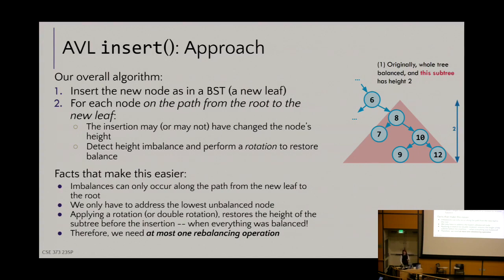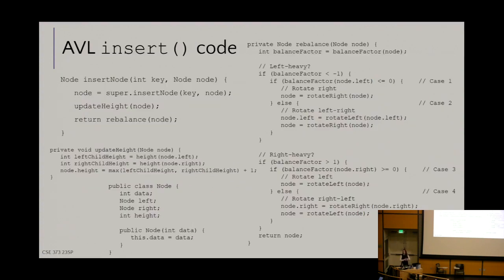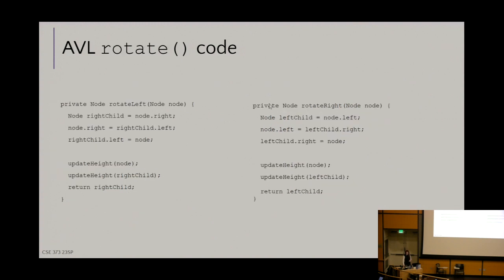The cons: AVL trees are notoriously a pain to implement. You've got two references at each level, a bunch of swapping. Here's some code I pulled — insert node updates the height and calls rebalance; the rebalance method checks each case with heavily nested ifs; the rotate-left and rotate-right look similar to linked list code with node.left, node.right, temporaries. This gets really prickly really fast.